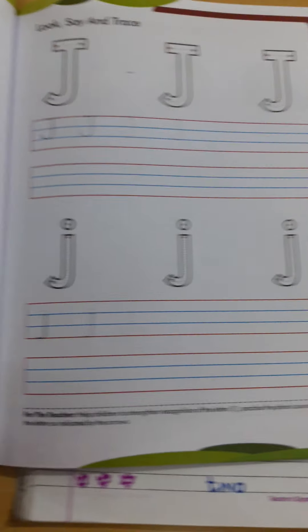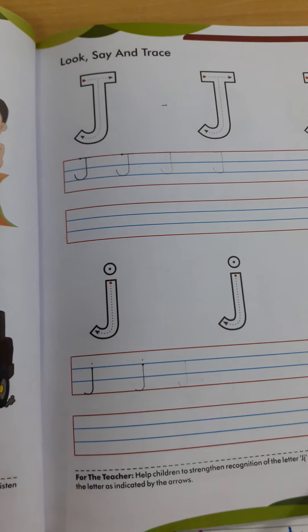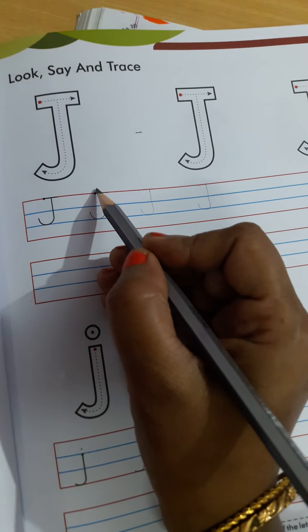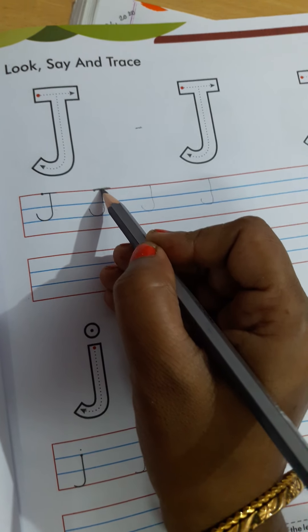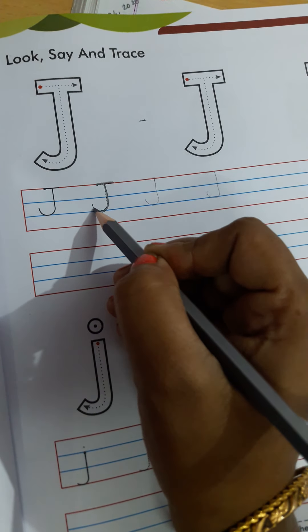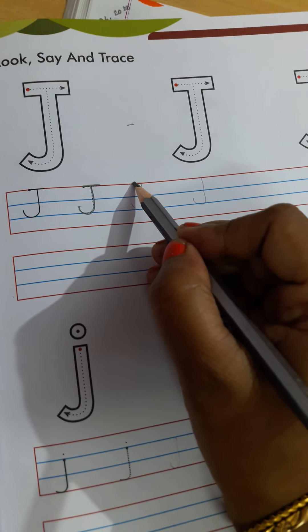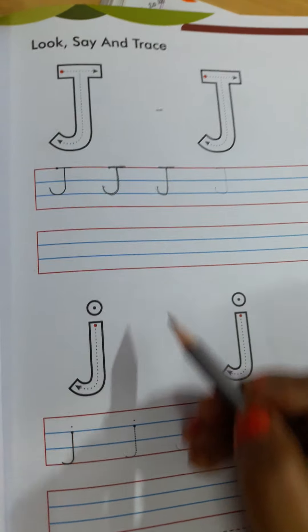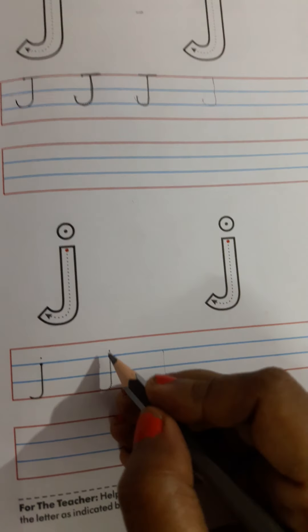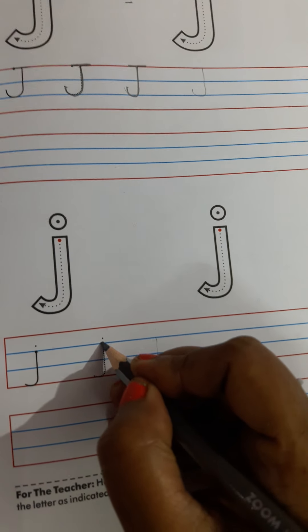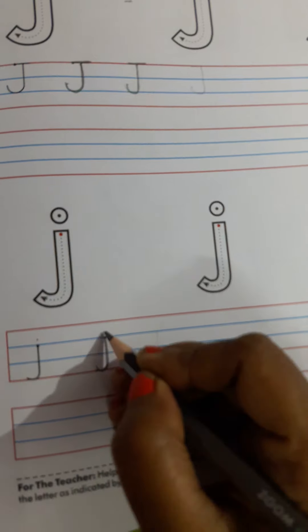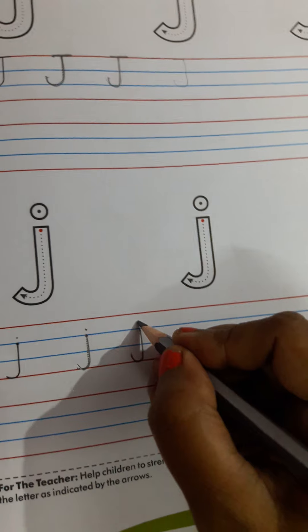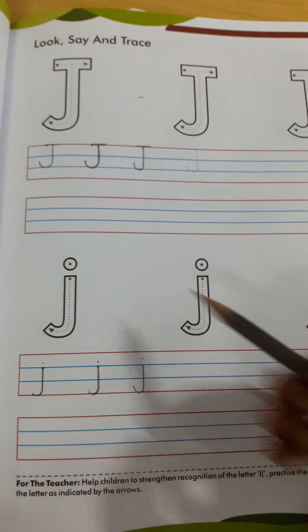J. Aur hum log apne book mein aaj J likhenge. Two finger distance leke. Sloping line — up to down. Turn. Again two finger distance leke. Sloping line — up to down. Turn. This is capital J. And this is small j. Middle lines — start from the middle, up to down. Turn. Dot. Children, you do this page.